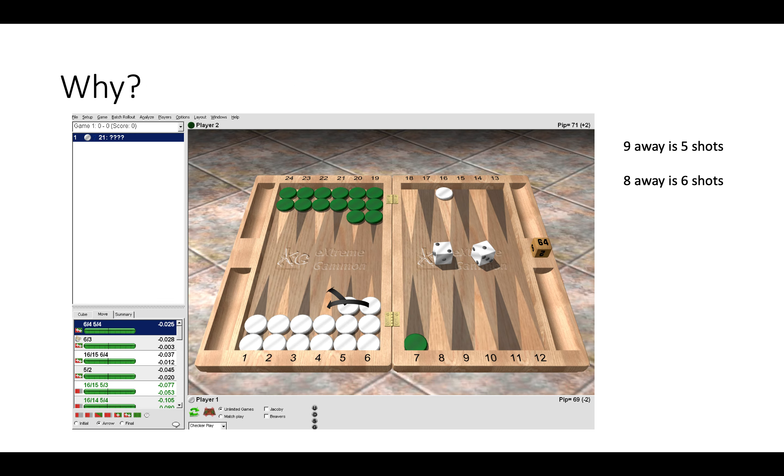So now it's simply best again to leave the blot where it is in the outfield, because if we decided to move it any closer we would be leaving more shots. So currently nine away is only five shots for green. If we moved it to eight away we would be giving six shots, and if you moved it six away, as you know, there will be 17 shots. So simply better to shuffle the checkers in our home board and leave the blot where it is.